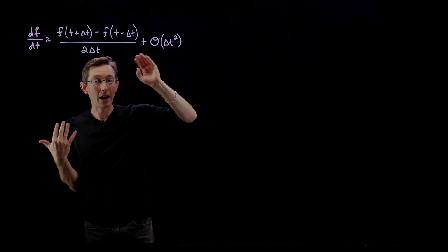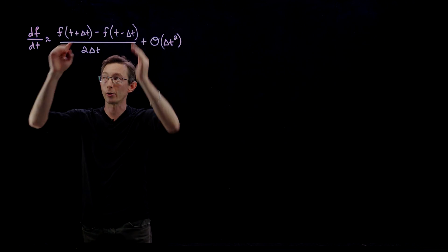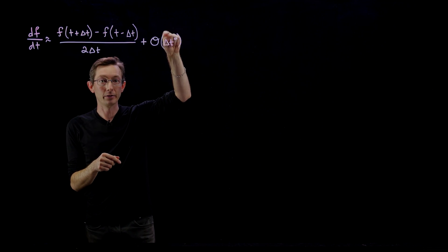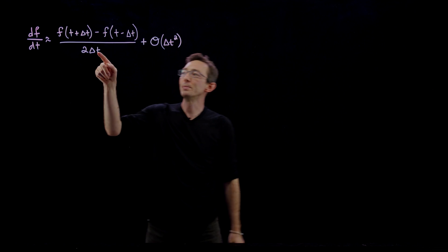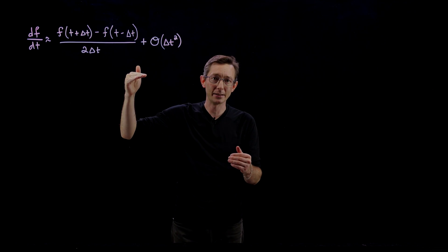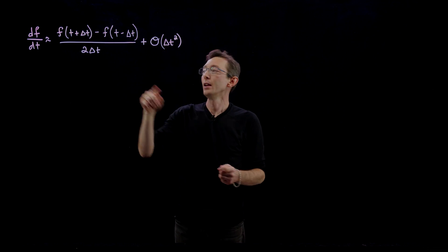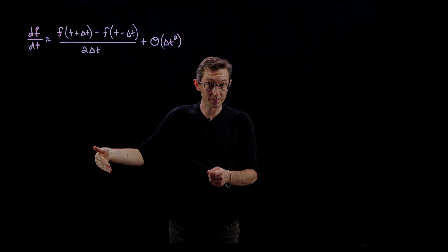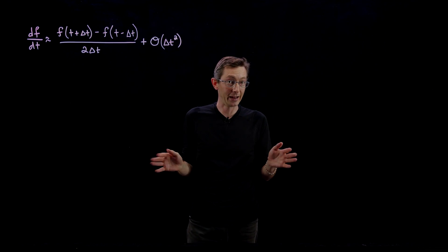The central difference derivative has good error scaling, meaning this expression approximates the derivative with only a little bit of error that is proportional to delta t squared. If I cut delta t in half, my error goes down by a factor of four. If I decrease delta t by a factor of ten, my error gets a hundred times smaller. So that's very advantageous.